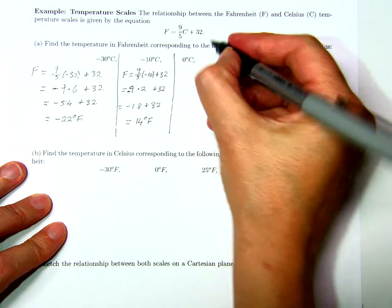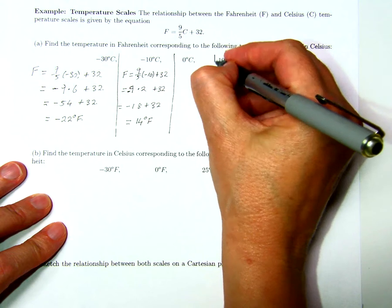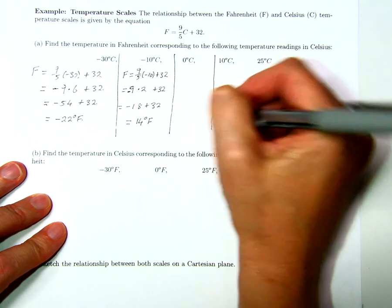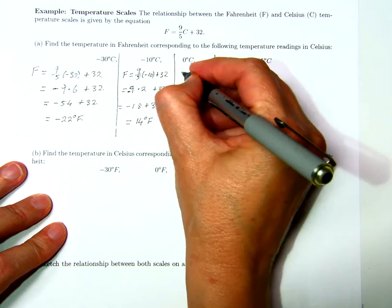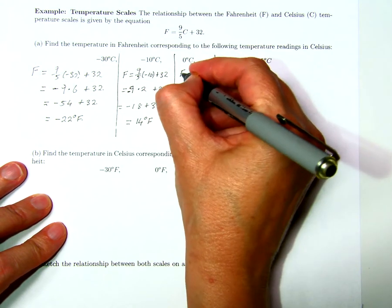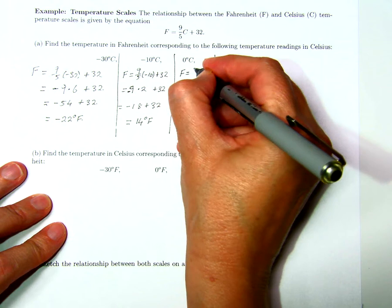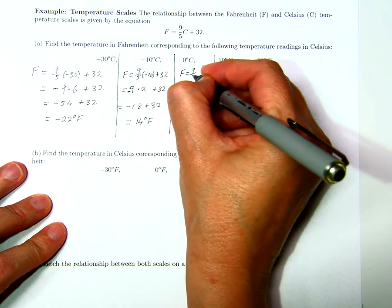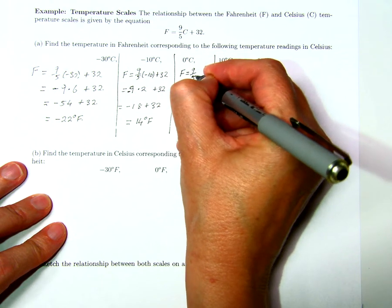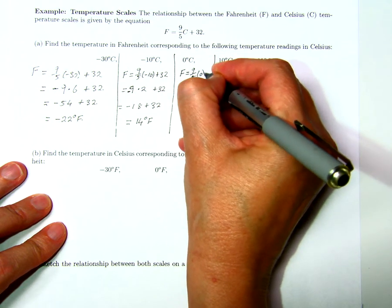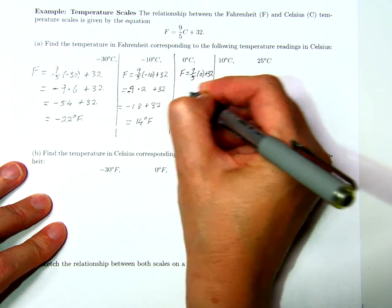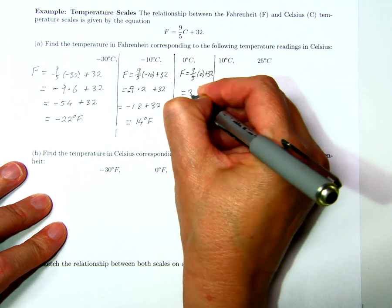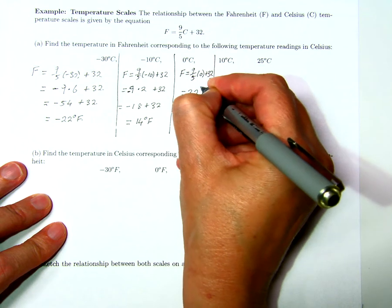This one's easy. When the Celsius reading is 0, the Fahrenheit reading is 9 over 5 times 0 plus 32, which is 32 degrees Fahrenheit.